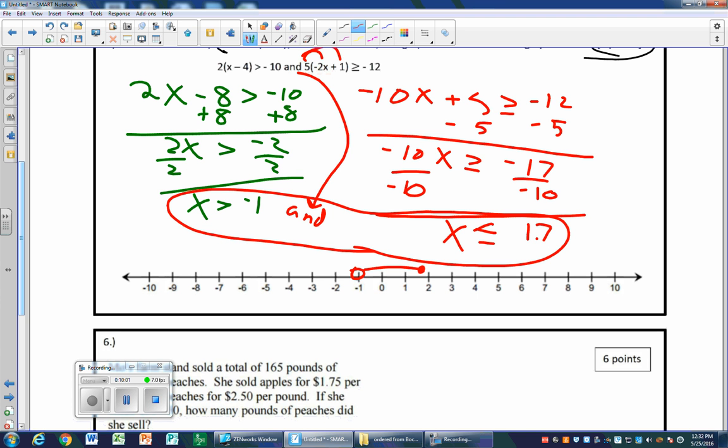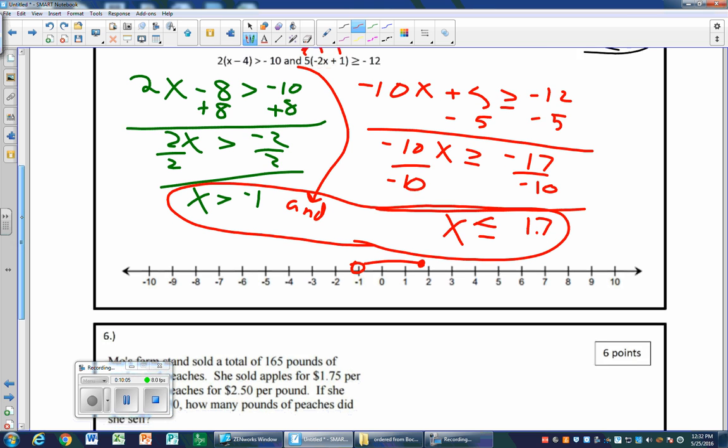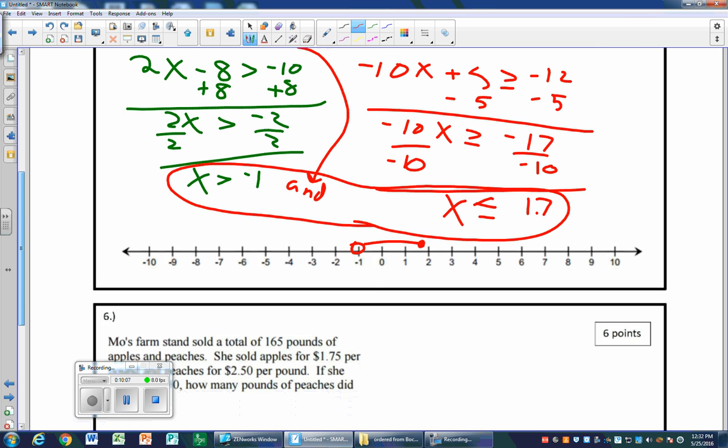With ands, you're always going to be shading in between. Now I said after I do this, I'm going to do set builder notation. Since this is shaded in between, you do all numbers x such that x is in between. It's an open circle, so I just leave it as a less than. It's a closed circle on the right hand side, so I leave the right hand one as a less than or equal to, and it's 1.7. And the number over here was negative 1. If you have any questions on how to do that, just ask me in class.